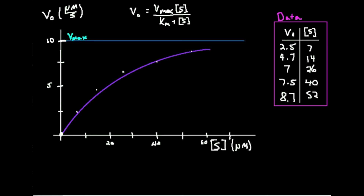We already talked about some of the theory in previous videos. Now we're going to talk about how you plot this. When you plot initial rate versus substrate concentration — the y-axis is initial rate, the horizontal axis is substrate concentration — it has a hyperbolic shape. The hyperbolic shape means it's going to start off at the origin and increase, then level off, approaching some value as the substrate concentration gets higher and higher. That value the curve approaches as substrate concentration goes to infinity is the Vmax.